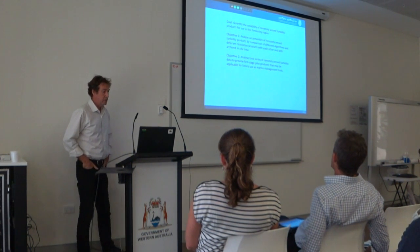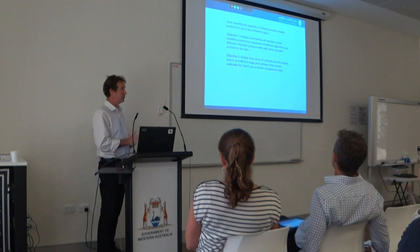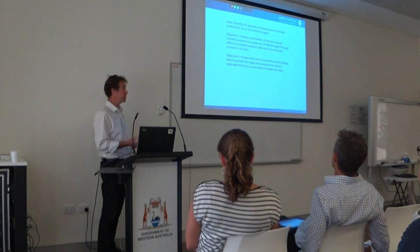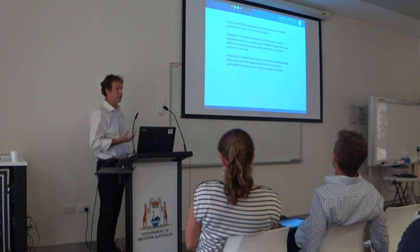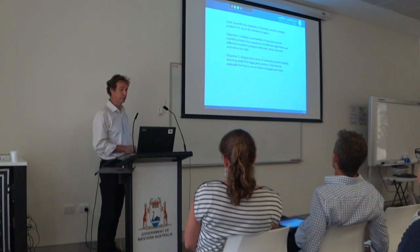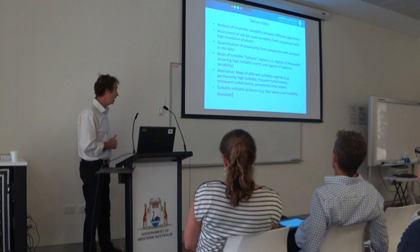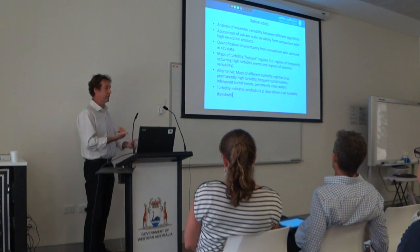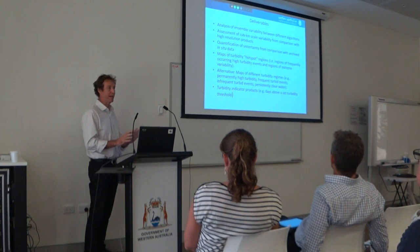The essential goal: quantify the reliability of remotely sensed turbidity products for use in the Kimberley. We can measure turbidity — suspended sediment concentration — but how confident are we in those measurements? If we're trying to detect change, extreme events, and processes, we need confidence in the product. So we went through the process of developing an algorithm, analysing sensitivity, comparing to other algorithms to give us some level of confidence, and then used the remote sensing products to analyse the time series to look at regional patterns in turbidity.